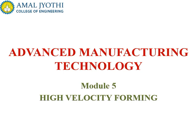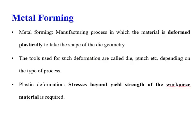Hello students, today we will be discussing the topic of high velocity forming, which is a topic in Module 5 of the subject Advanced Manufacturing Technology. Metal forming is a secondary manufacturing process in which the material is deformed plastically to take the shape of the die geometry. This deformation is permanent, achieved by inducing stresses beyond the yield strength of the material. To impart this deformation, the commonly used system is a punch-die system.